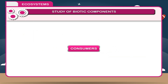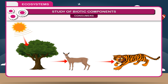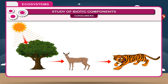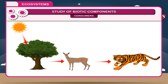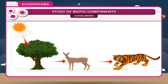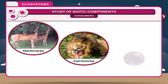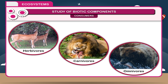Consumers are those who cannot manufacture their own food and are dependent on autotroph organisms for their food. Consumers can be further subdivided into three groups depending on their food. These are herbivores, carnivores and omnivores.